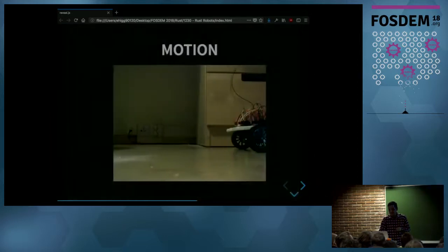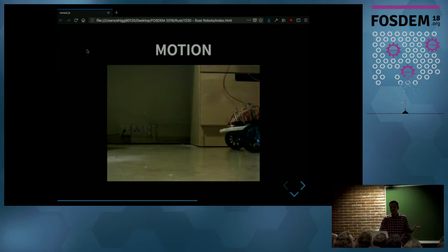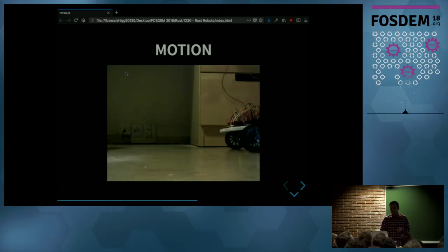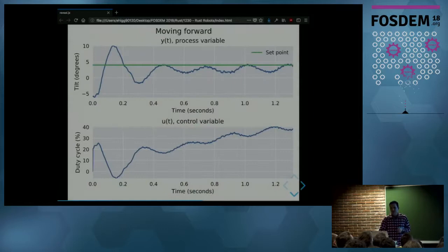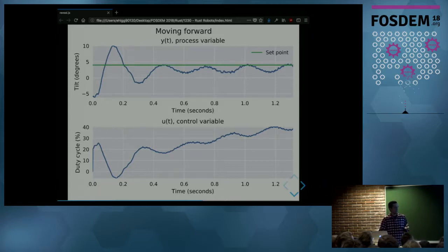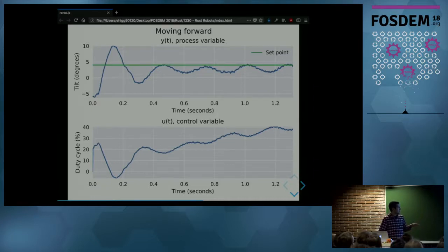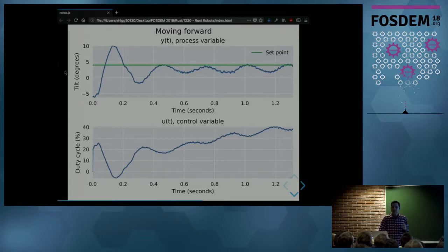Continuing with stable PID gains: before, the robot was stable but didn't move. To move the robot we simply change the set point. Setting it to 10 degrees gave almost no motion, but choosing a value of 4 makes the robot move forward. The tilt angle stabilizes around the new set point, and the duty cycle stabilizes to a non-zero value, giving speed to the motor. A value less than 10 gives forward motion; a value greater than 10 gives backward motion.